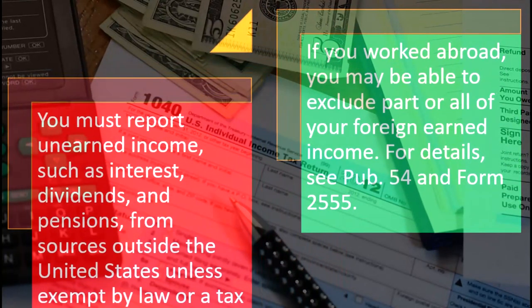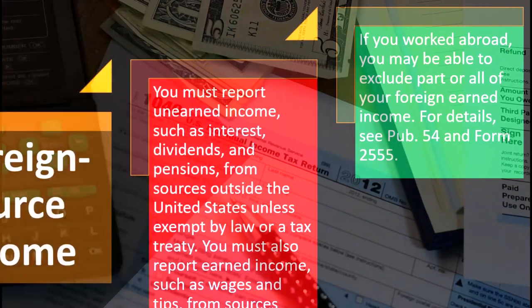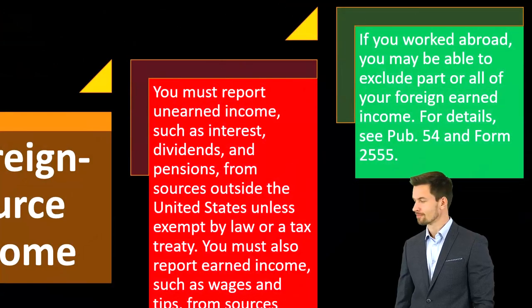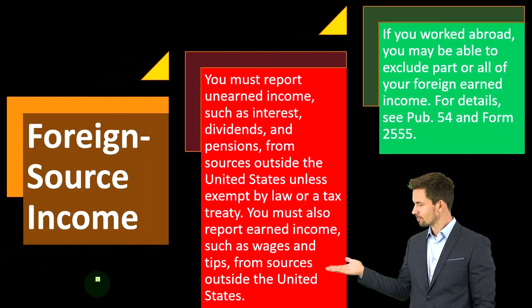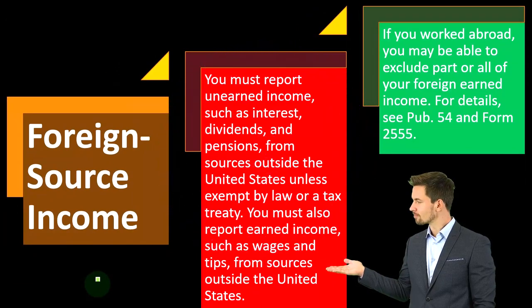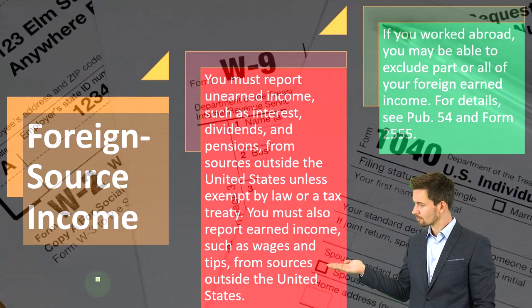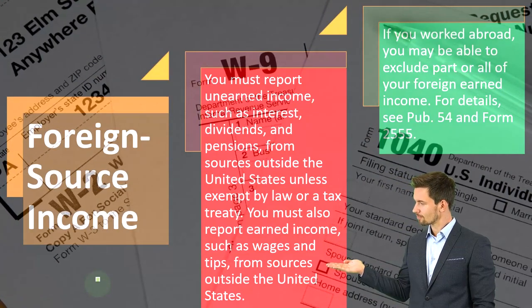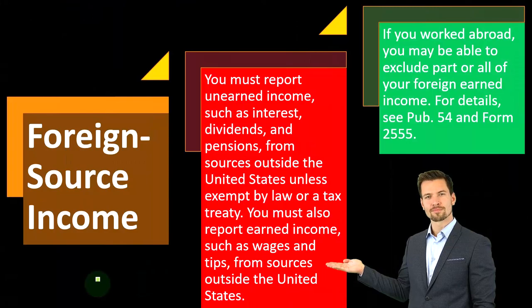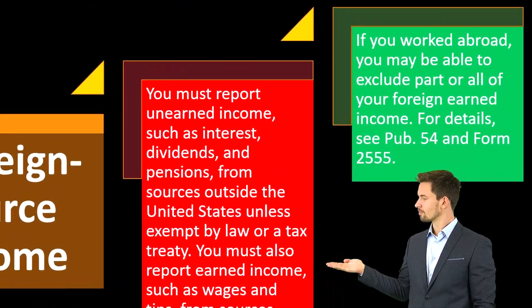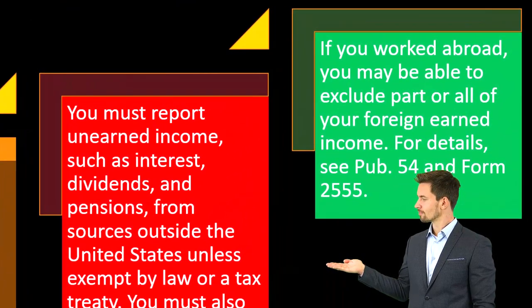If you have foreign income, the question is how you have to treat it, because you now have two countries that could be taxing you. You need to get into the rules regarding the exemption and possibly excluding part or all of your foreign income. For details, see Publication 54 and Form 2555 and the instructions for that form.